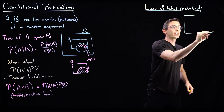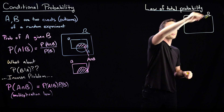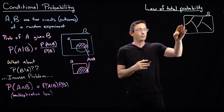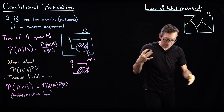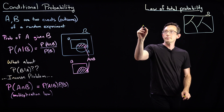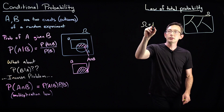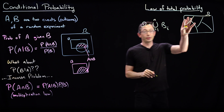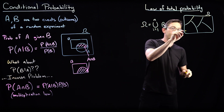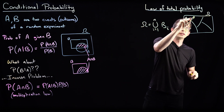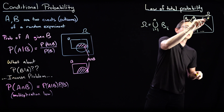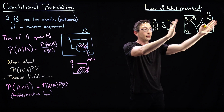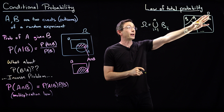Let's say we break our set omega into a bunch of disjoint sets B1, B2, B3, B4, and so on — so omega equals the union of disjoint sets from i equals 1 to N. I'll have N of these disjoint sets: B1, B2, B3, ... BN. If I union all of them together, I get my big set omega.